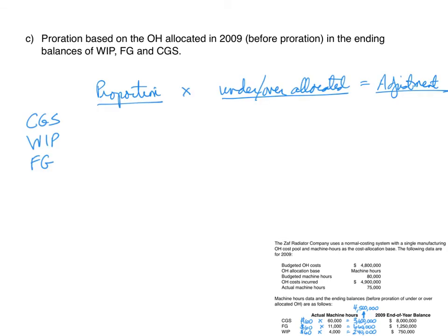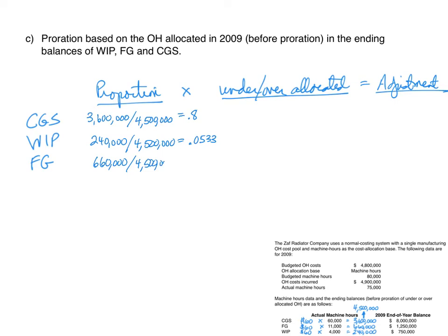Now we calculate proportions. Cost of goods sold: $3,600,000 divided by the total $4,500,000 gives a proportion of 0.80 — the same as the other proration method. Work in process: $240,000 divided by $4,500,000 gives approximately 0.0533. Finished goods: $660,000 divided by $4,500,000 gives approximately 0.147.